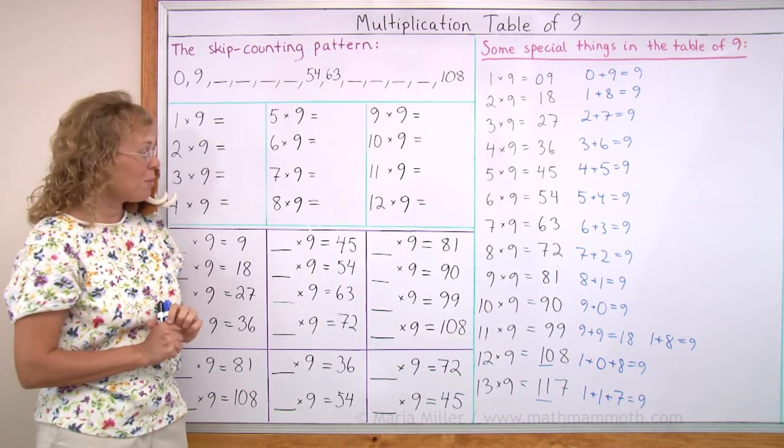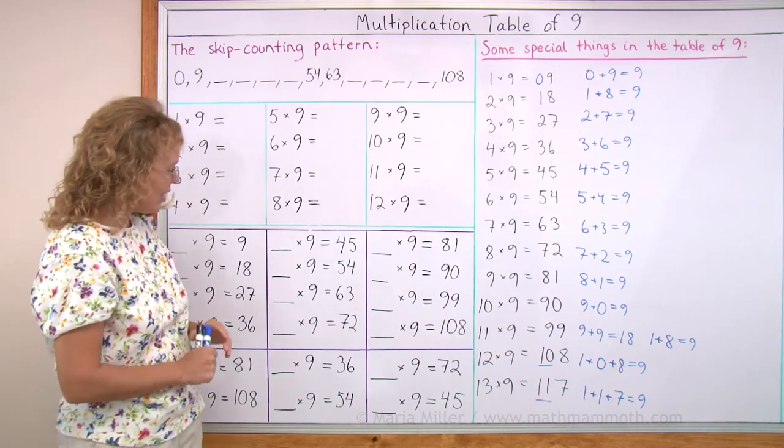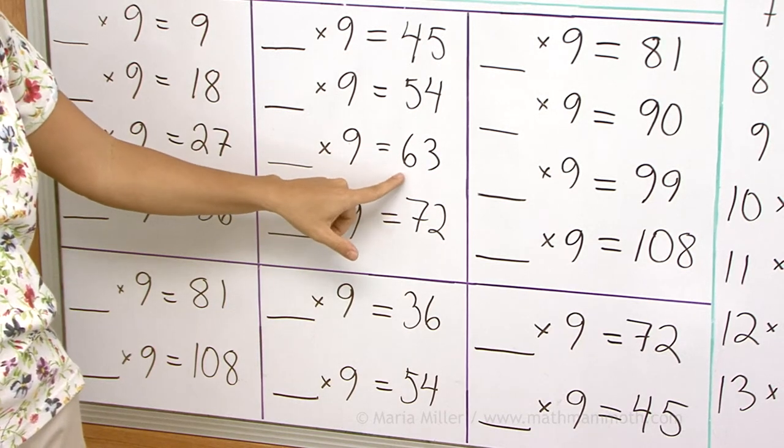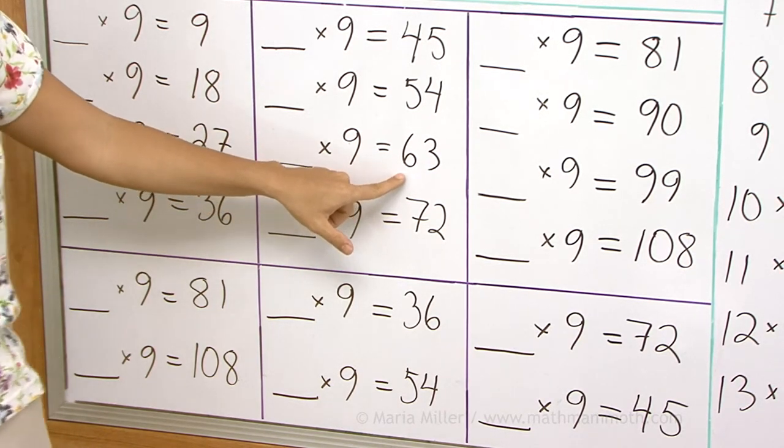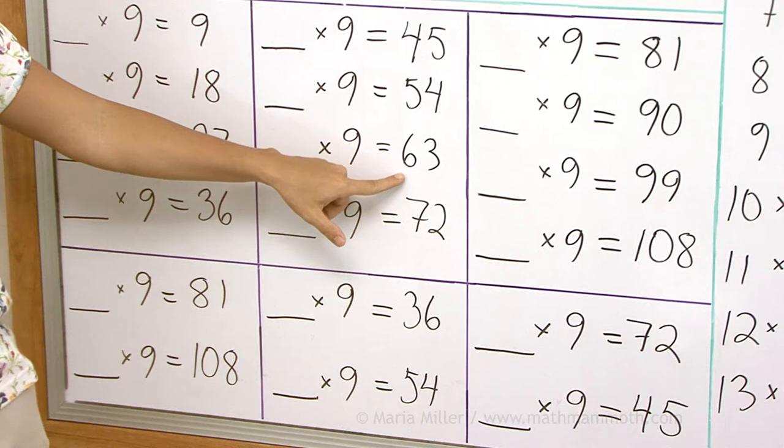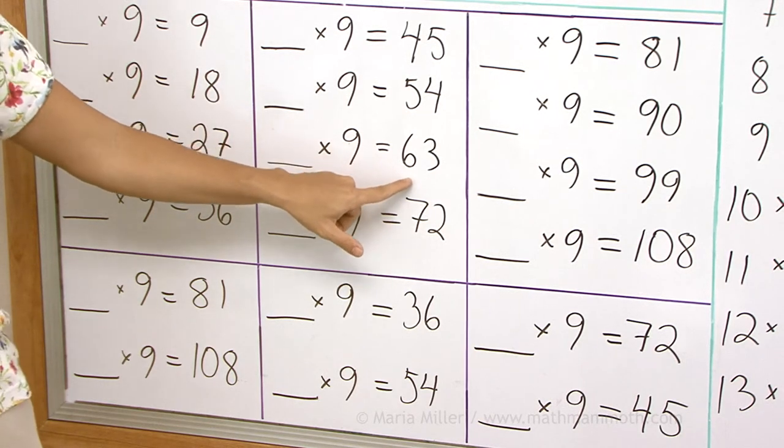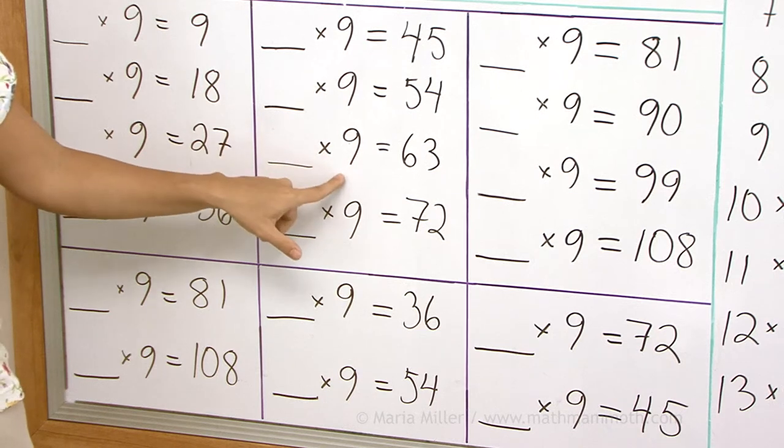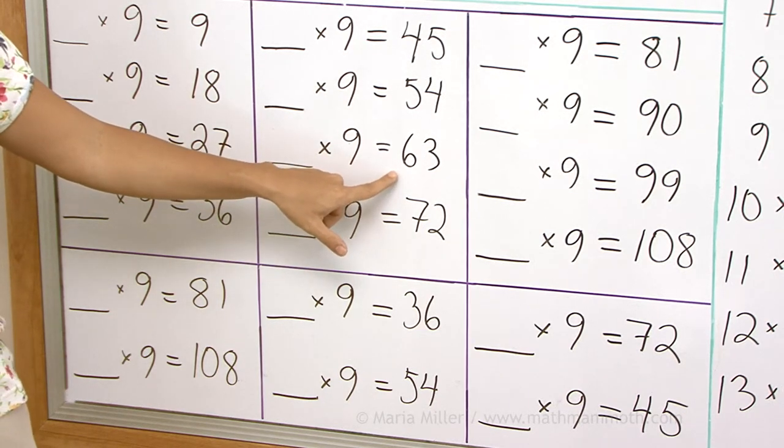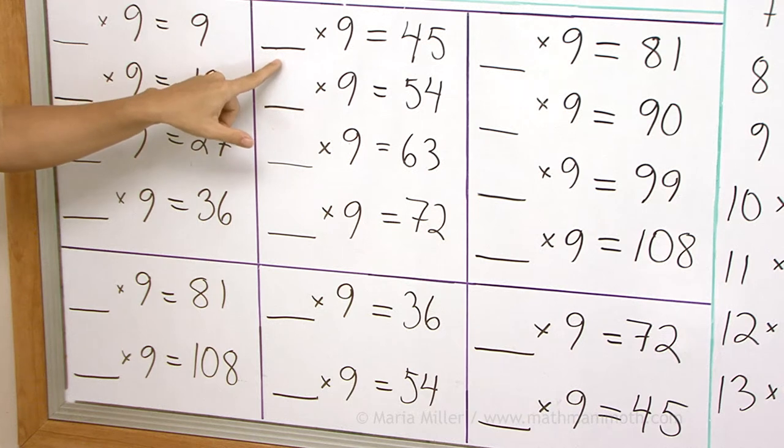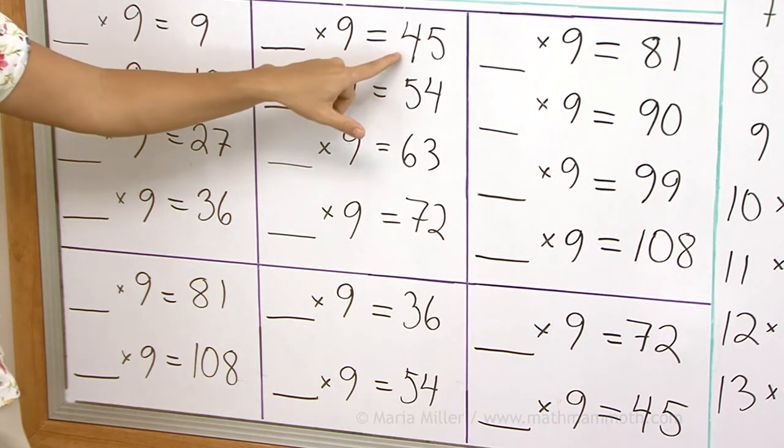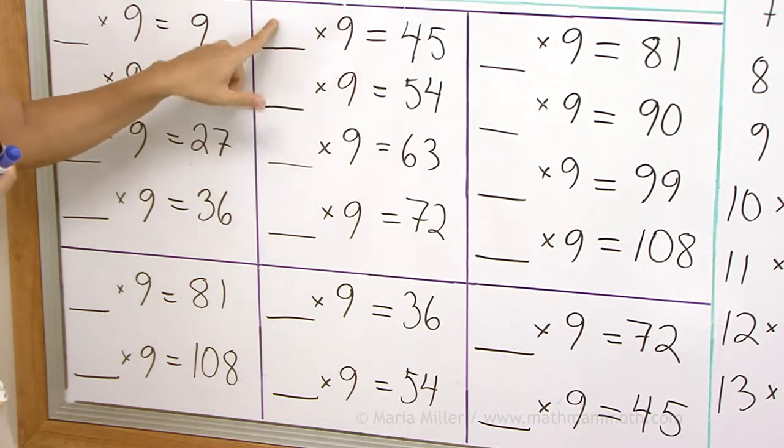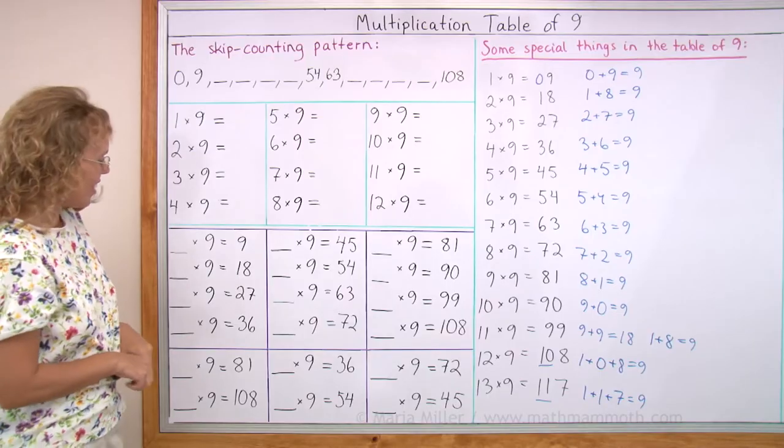Okay, now the table backwards. And let's say for example you're here, how many times 9 makes 63? Basically, you just need to think of the next 10, 70. 7 goes here, because 7 times 9 is less than 70, it's 63. Let's take another one. How many times 9 is 45? You're in the 40s. The next 10, 50. 5 times 9, 5 goes here.